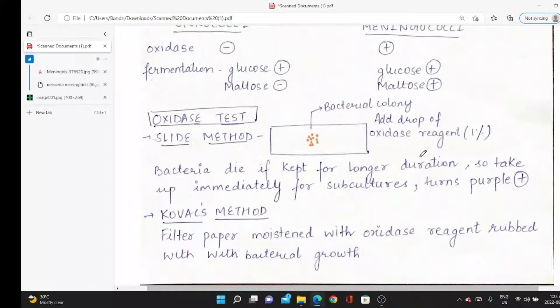Oxidase test has two methods: slide method or covex method. Slide method: we use a glass slide, keep the bacterial colony there, add a drop of oxidase reagent—1% tetramethyl-p-phenylenediamine. The bacterial colony will change color and turn purple if it's Neisseria meningitidis.